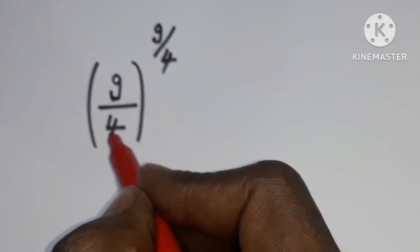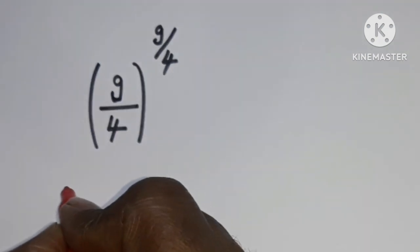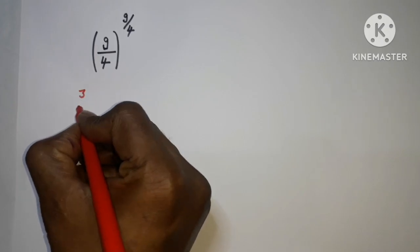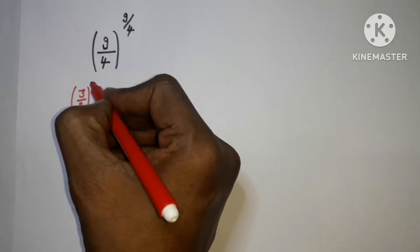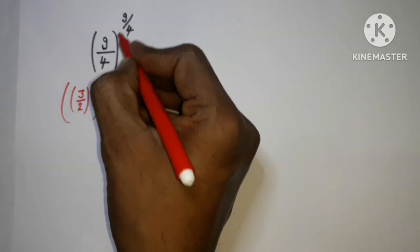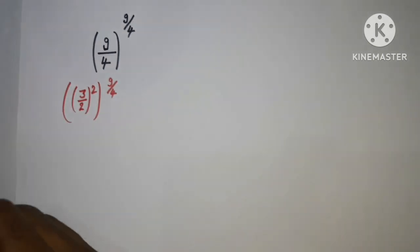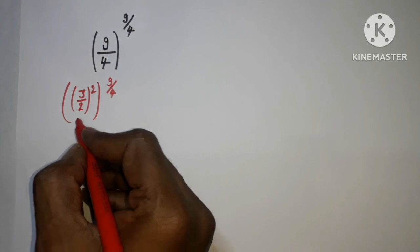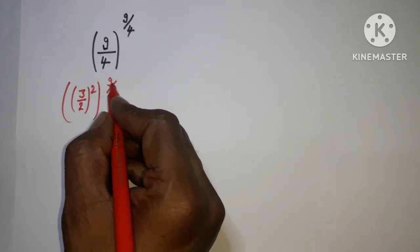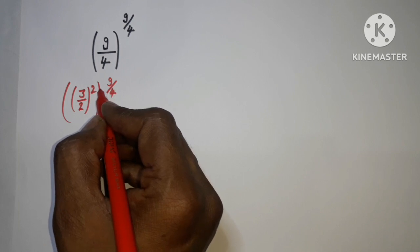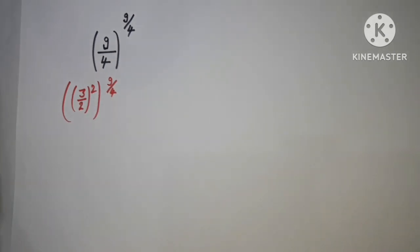First of all, we can see that 9 by 4 is already the square of 3 by 2. So we can write this as (3/2)² and the exponent 9 upon 4 remains as it is. Now (3/2)² gives us exponent 2, and this 9 by 4 can be multiplied with each other — it will be 2 multiplied by 9 upon 4.